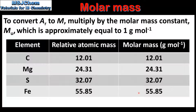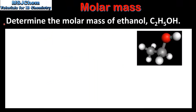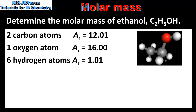Next we'll look at how to calculate the molar mass of a compound. In this example we'll determine the molar mass of ethanol, which has the molecular formula C2H5OH. On the right we can see one molecule of ethanol, which is made up of two carbon atoms, one oxygen atom and six hydrogen atoms.